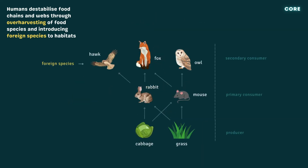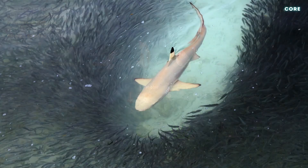Introducing a new species like hawks to control a population of rabbits that are causing damage to agricultural crops may cause foxes to eat more mice to make up for the lack of rabbits in their diet. Since owls also eat mice, this could have a knock-on effect on their numbers as well.